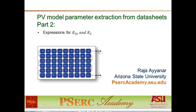In part one of the videos on PV parameter extraction, we discussed the key parameters that need to be obtained from the data sheets and we looked at what is the typical information available from a commercial PV module. We derived an expression for the photon current, which turns out to be simply the short circuit current available directly from the data sheet. Now in part two on parameter extraction, we will derive the expressions needed to determine the shunt resistance as well as the series resistance.